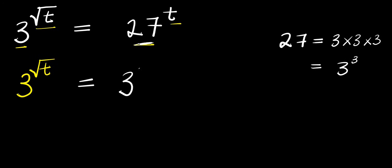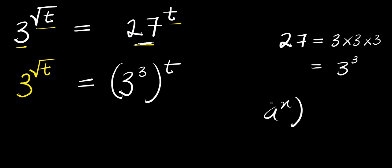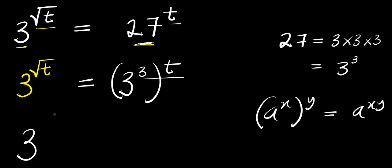So you have 3 power 3, raised to the power of t. Now if you have a power x raised to the power of y, that equals a power x times y. So 3 times t gives 3t, so we have 3 power square root of t.